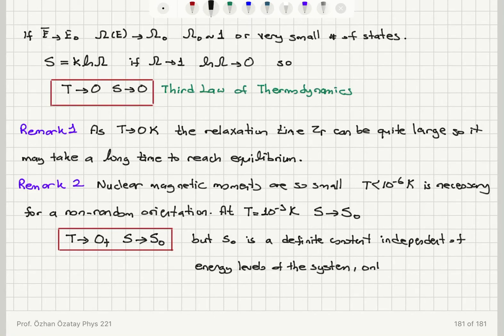But this value S0 is a definite constant, which is independent of energy levels of the system. And it only depends on the types of atoms. So you can say this is a modified third law of thermodynamics, or it's more practical. Anyway, if you have a degenerate system, if you have more than one accessible state corresponding to the ground state energy, you would get an entropy value that is non-zero finite, but very, very small still.